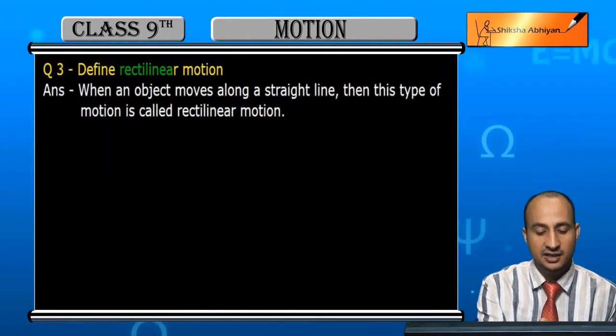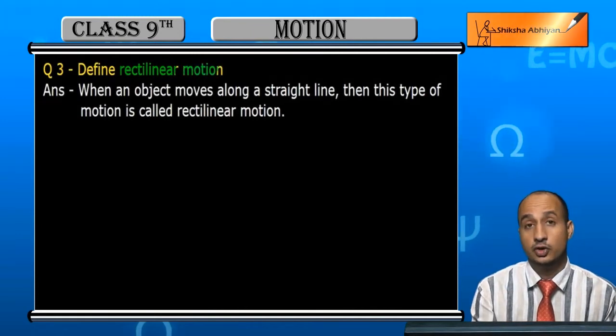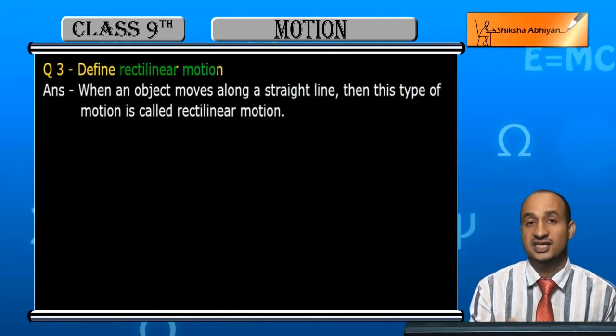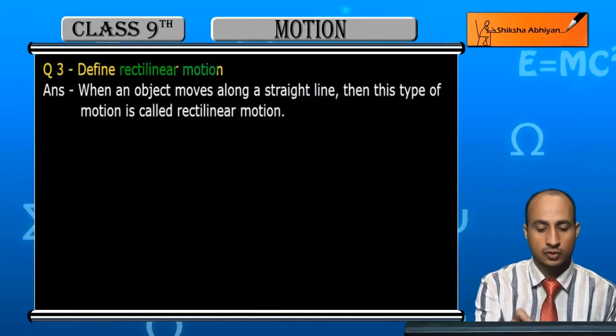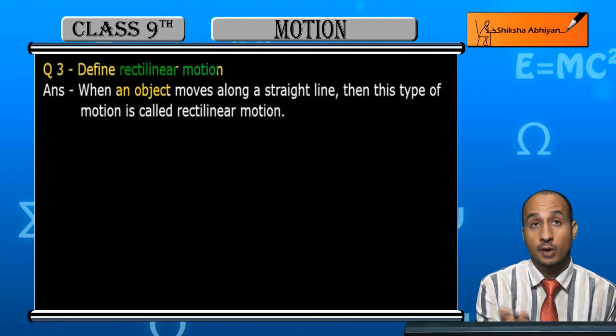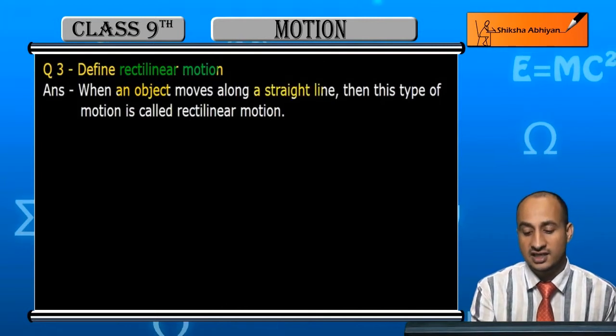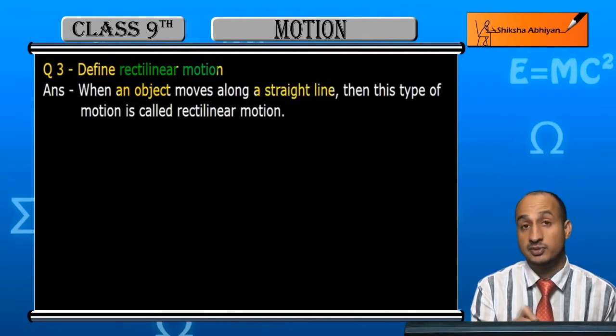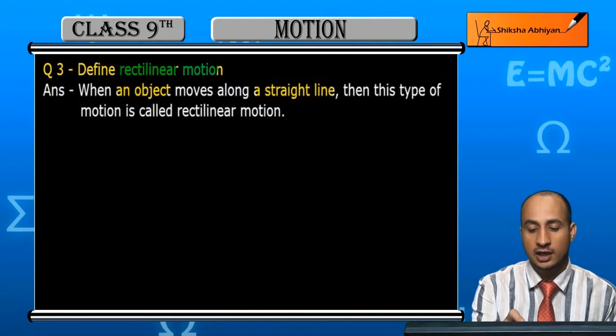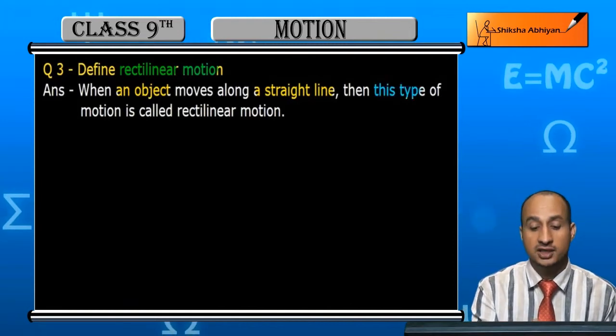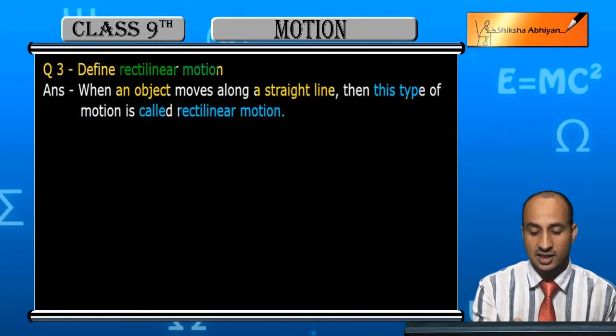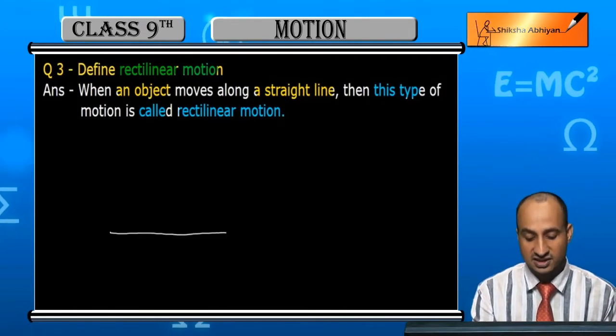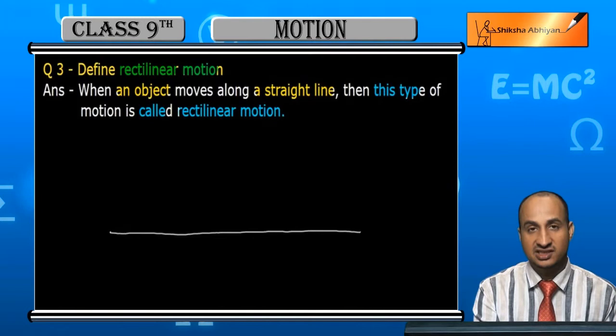Define rectilinear motion. You have to define rectilinear motion. Rectilinear motion: when an object moves along a straight line, this type of motion is called rectilinear motion. That is, this is a straight line, along this straight line.